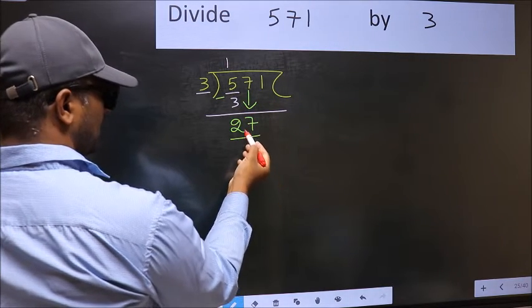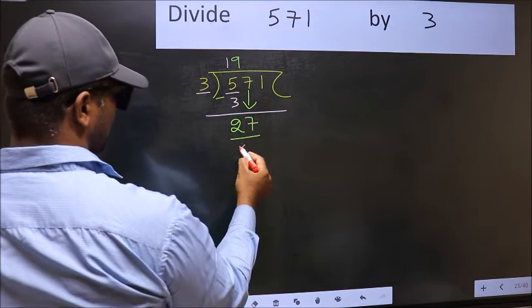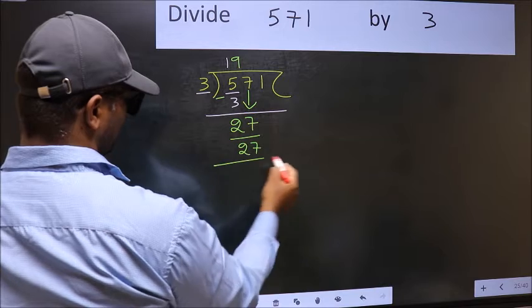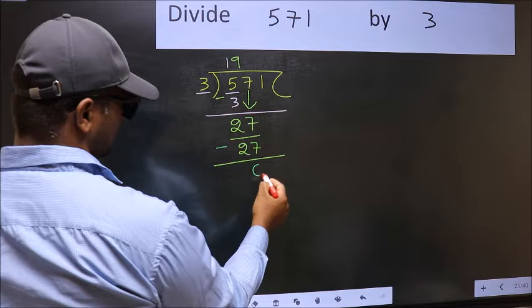Now 27. When do we get 27 in 3 table? 3 nines, 27. Now you should subtract 27 minus 27, 0.